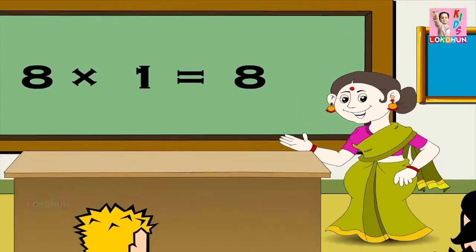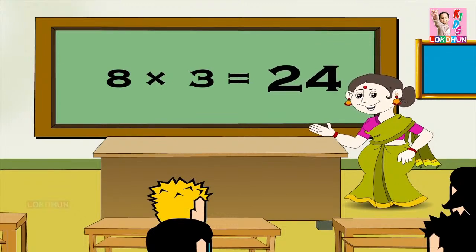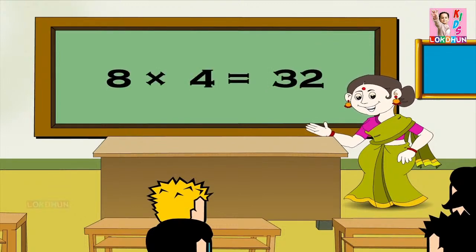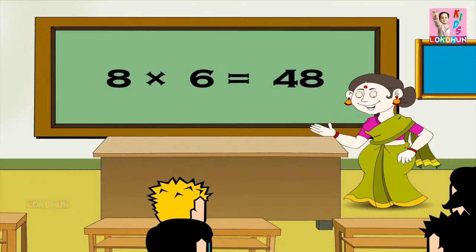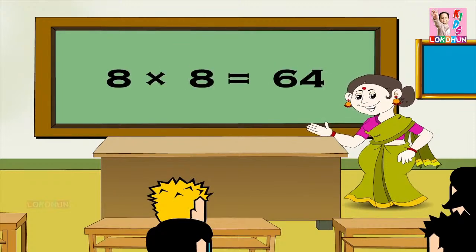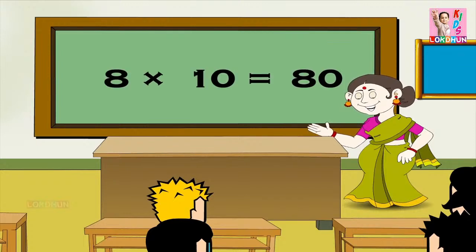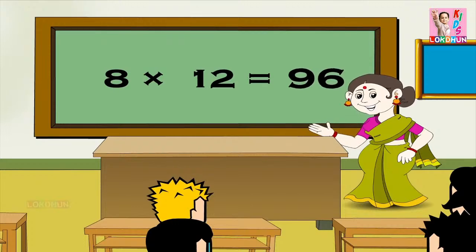Eight ones are eight, eight twos are sixteen, eight threes are twenty-four, eight fours are thirty-two, eight fives are forty, eight sixes are forty-eight, eight sevens are fifty-six, eight eights are sixty-four, eight nines are seventy-two, eight tens are eighty, eight elevens are eighty-eight, and eight twelves are ninety-six.